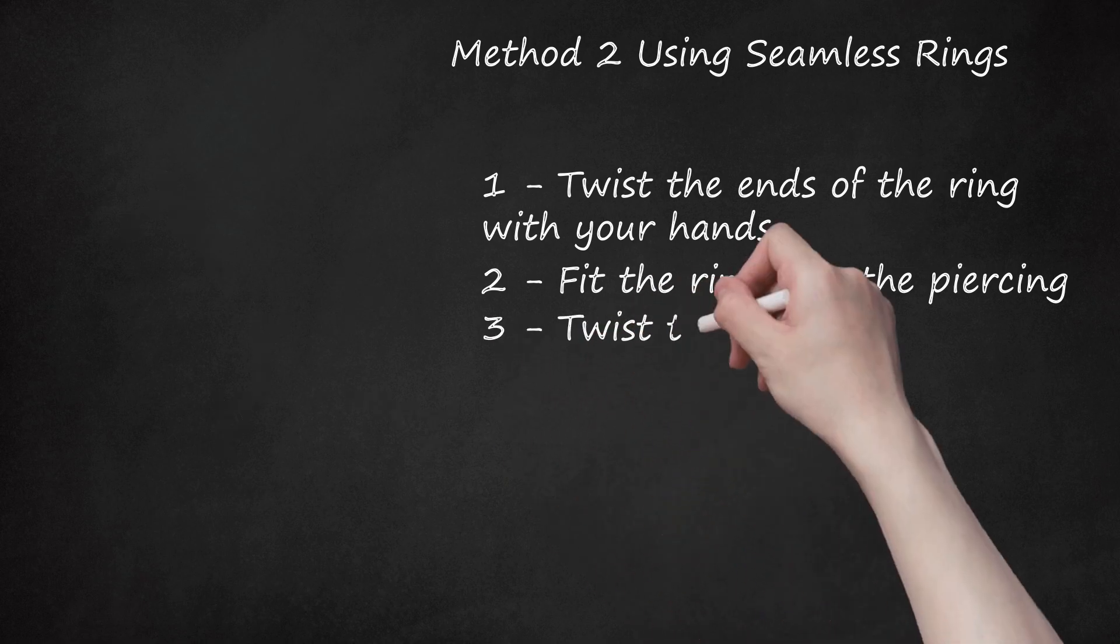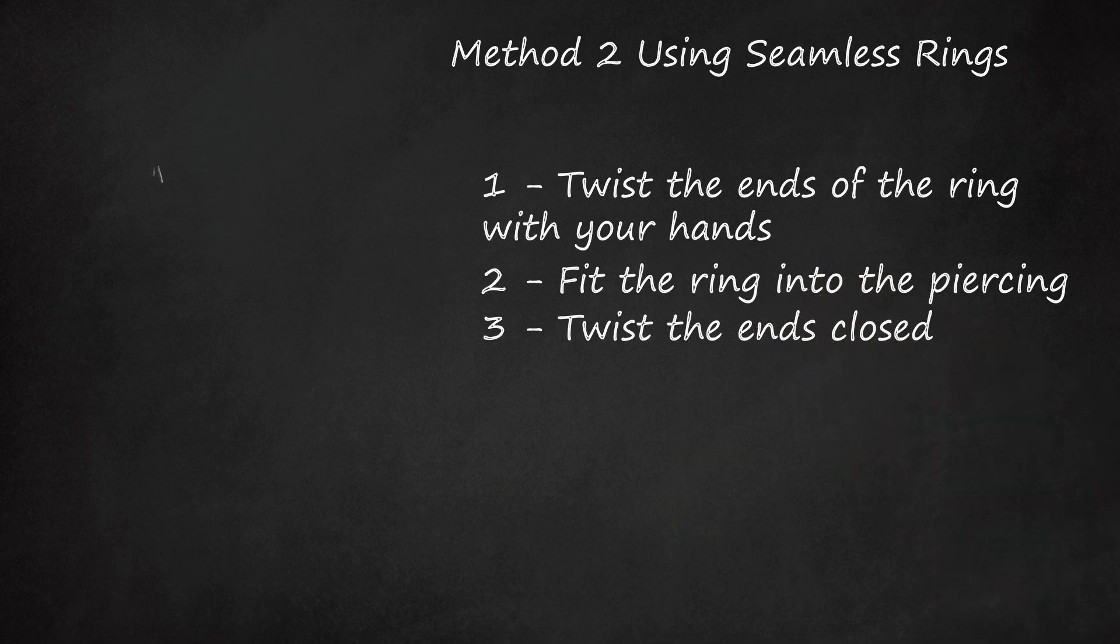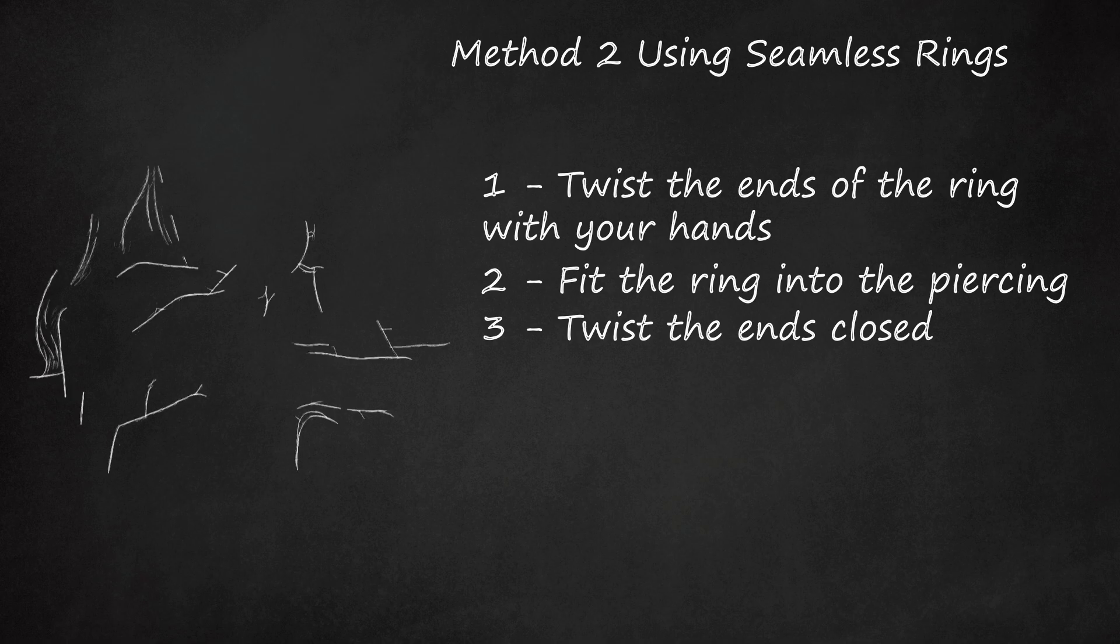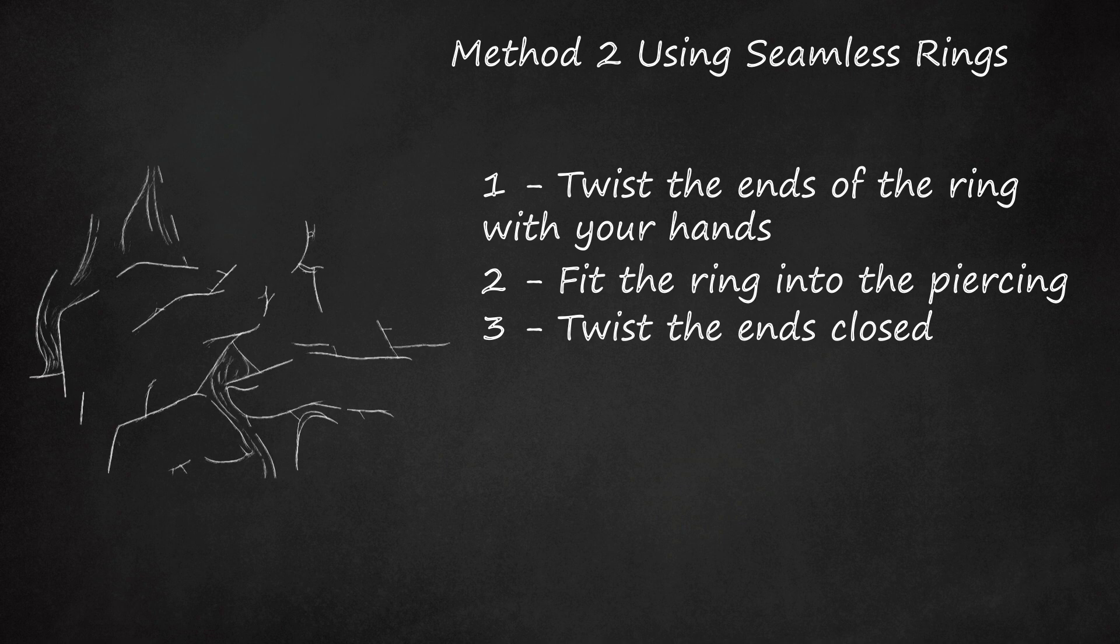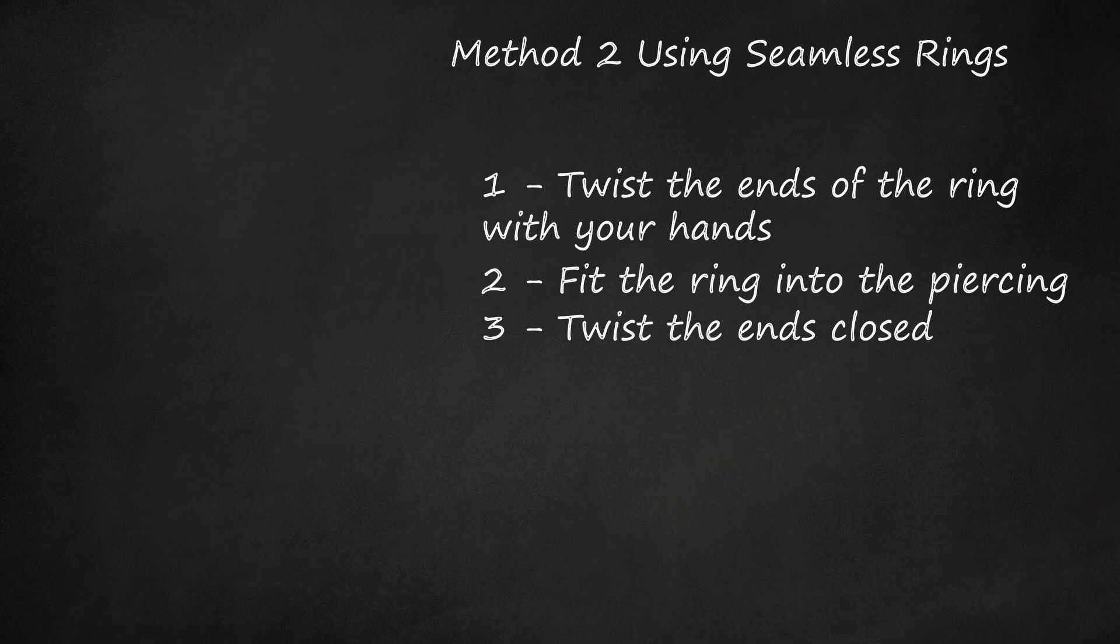Step 3 - Twist the ends closed. Use your fingers to gently twist both ends of the ring back toward each other until they are brought together. Make sure the ends are brought as close as possible. This will keep the hoop secure and the edges of the ends from scraping your nose.